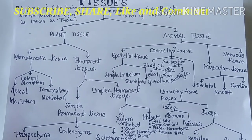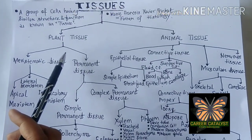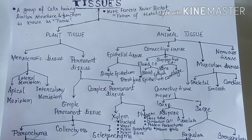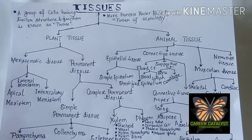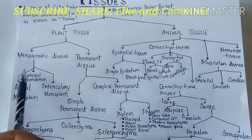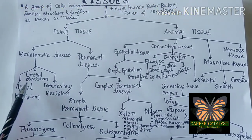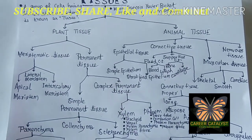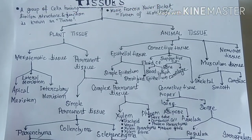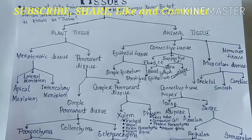There are two kinds of tissues: plant tissue and animal tissue. Plant tissues are divided into two categories: the first is known as meristematic tissue, and the other is known as permanent tissue. Meristematic tissue is a temporary tissue, also known as growing tissue.